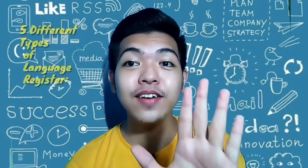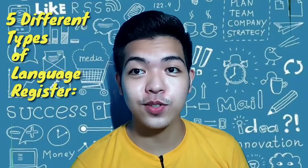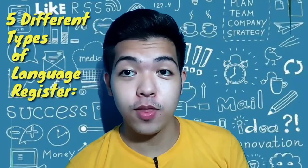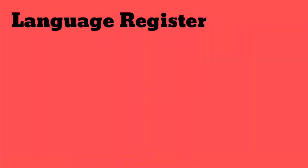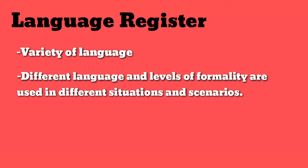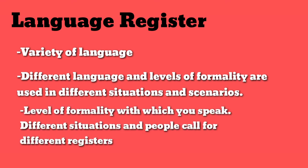We're going to talk about the five different types of language registers. But before that, let's first define what language register is. It is a variety of language used for a particular purpose or in a particular communicative situation. Different language levels of formality are used in different situations and scenarios. Language register is the level of formality with which you speak. Different situations and people call for different registers.